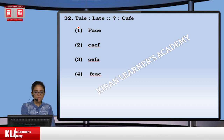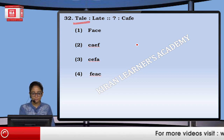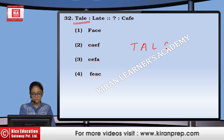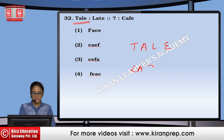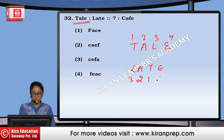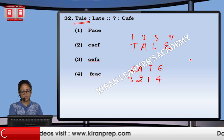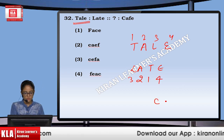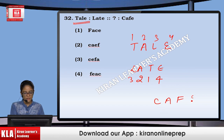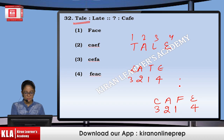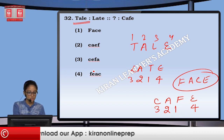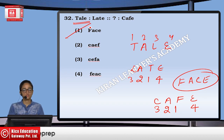Now with alphabet analogies — if I arrange the letters of TAIL, I get LATE. That means the pattern is positions 3, 2, 1, 4. So if I arrange the word CAFE using positions 3, 2, 1, 4, it becomes F, A, C, E — that means FACE. So the option will be the first one.